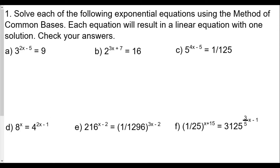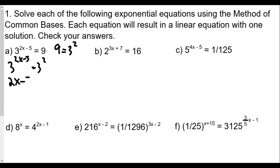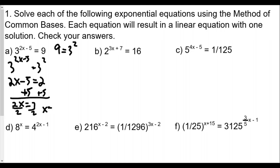For our first question, part a, we have 3 to the power of (2x − 5) equals 9. We ask ourselves: can we write 9 as base 3? Yes — 9 equals 3 squared. So now we have 3^(2x−5) equals 3^2. Since the bases are equal, the exponents must be equal: 2x − 5 = 2. Adding 5 to both sides gives 2x = 7, then dividing by 2 gives x = 3.5.